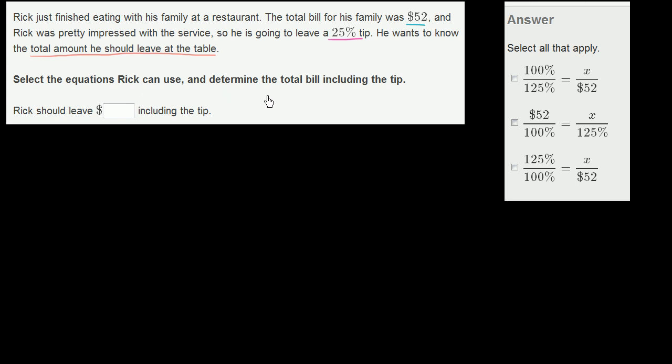He wants to know the total amount he should leave at the table. Select the equations Rick can use and determine the total bill including the tip. So the unknown thing, the thing that we should figure out, is the total amount he should leave at the table. So let's just call that x.